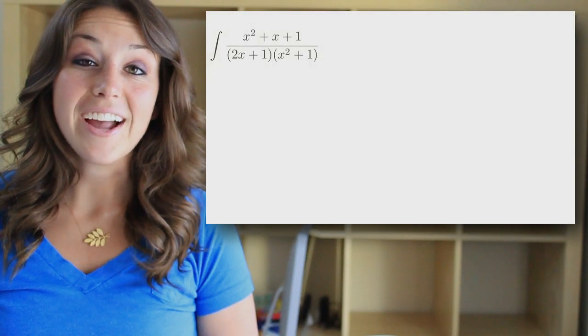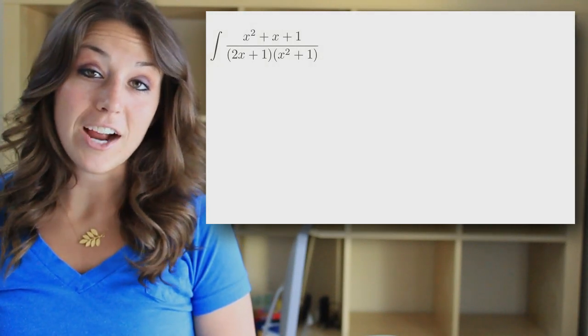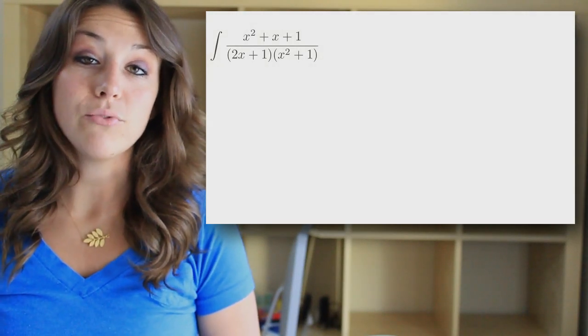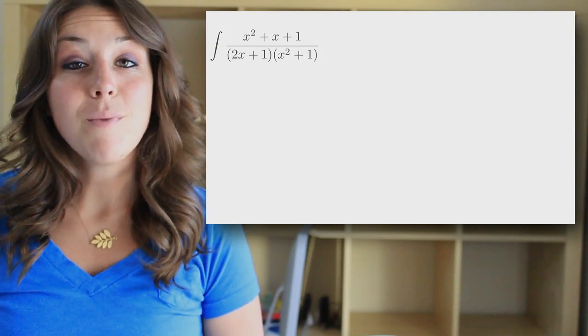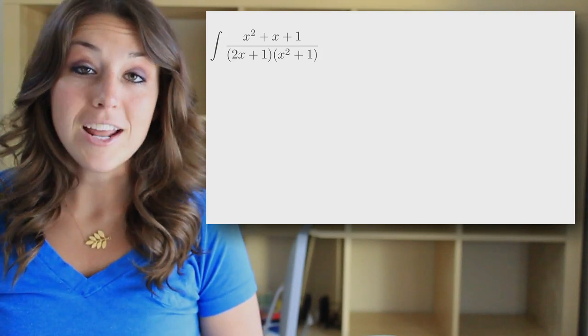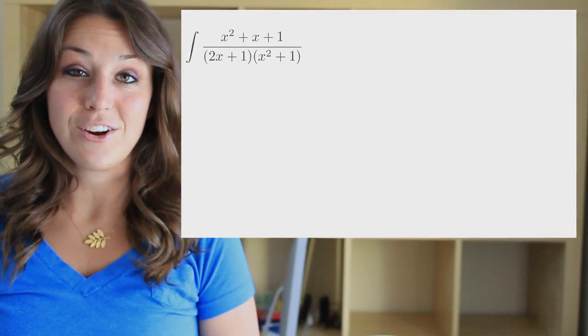If u-substitution and integration by parts aren't working for you, you may want to try partial fractions. This method can be useful whenever you have a rational function, or fraction, to integrate. In fact, if your original function is a fraction, you may want to try partial fractions before u-substitution or integration by parts. This method will allow you to break your fraction into smaller, more manageable fractions that are easier to integrate.